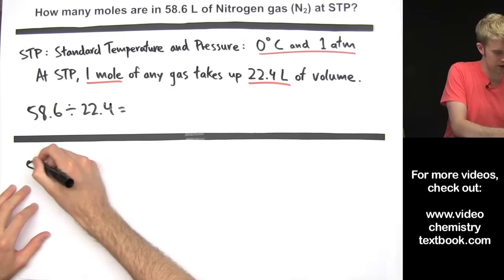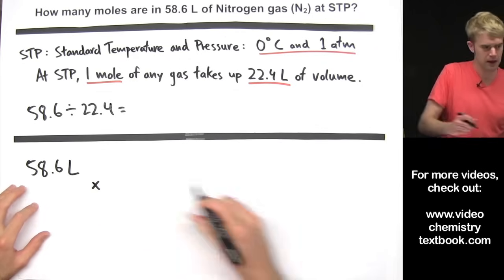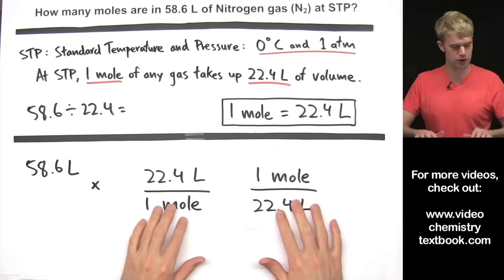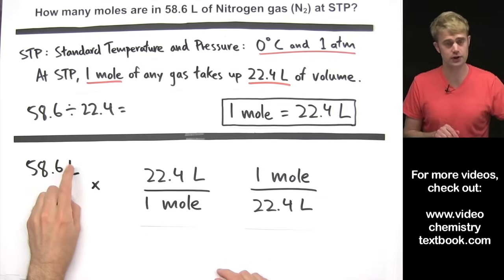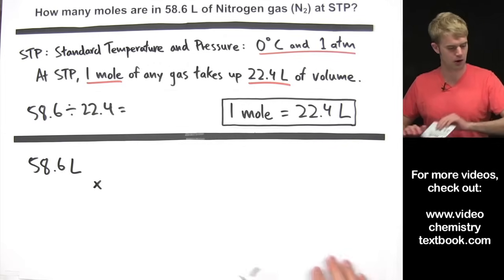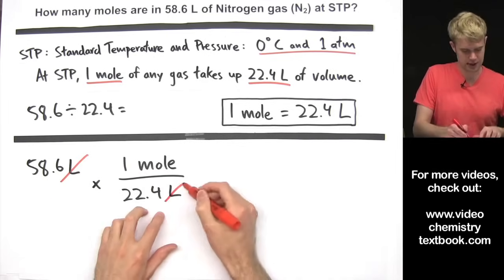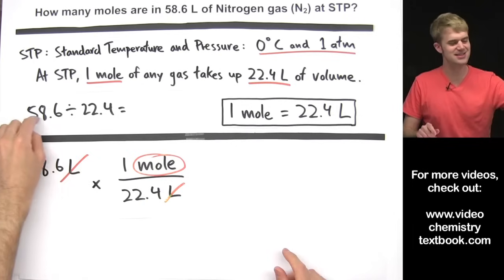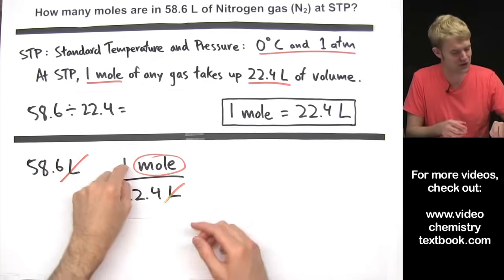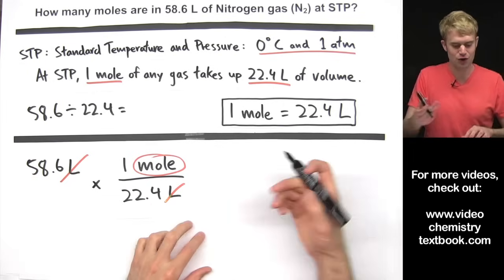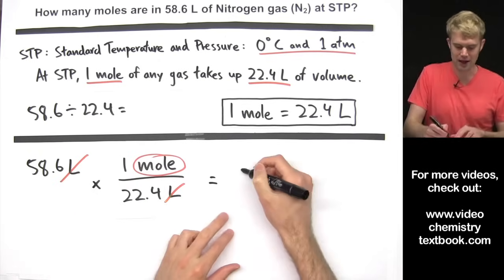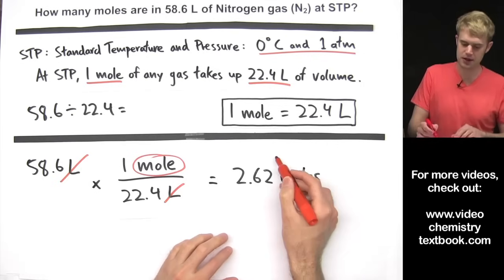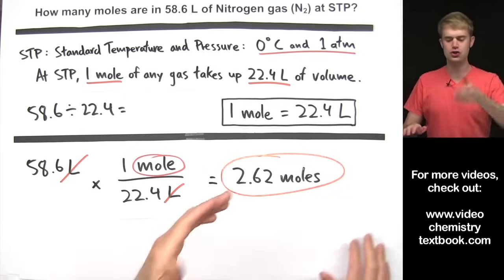To do this with conversion factors, we start with 58.6 liters and use the relationship 1 mole = 22.4 liters to write two conversion factors. We choose the one that gets rid of liters, putting liters on the bottom. Liters cancels out, leaving us with moles. The math is 58.6 times 1 divided by 22.4. We get 2.62 moles, rounded to three significant figures, since the 1 in the definition doesn't count toward sig figs.